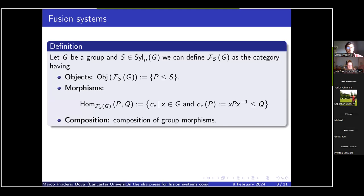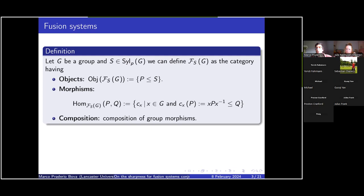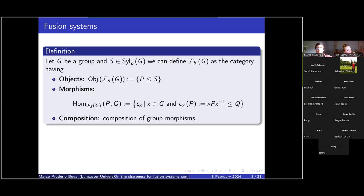Then I will make a list of the approaches made for solving such conjecture. And if we are well on time, I will conclude with a brief overview of how I proved in December that this conjecture works for a particular family of fusion systems, being the Benson-Solomon fusion systems.